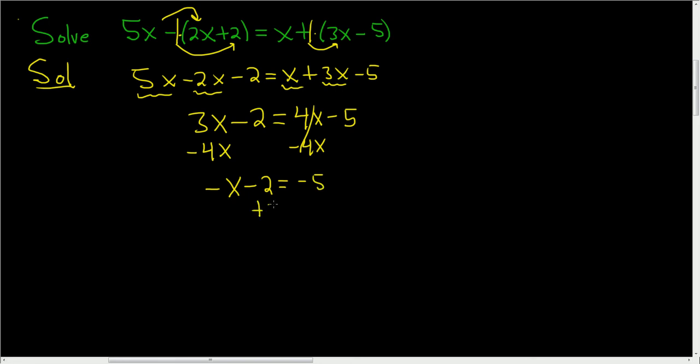Add 2 to both sides, so plus 2. We end up with minus x equals minus 3 and then to finish just divide both sides by negative 1 and so the final answer ends up being x equals 3 and that's it.